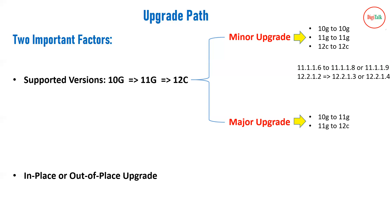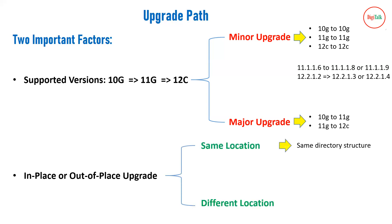The second factor is in-place versus out-of-place upgrade. In-place means the same directory structure — your binaries and domain remain at the same location. However, as of today when you upgrade middleware components, your binary location will typically change. For example, upgrading from 12.2.1.2 to 12.2.1.3 or 12.2.1.4 requires installing new binaries in a new location. So your domain upgrade will be in-place, but your binaries upgrade will be out-of-place.